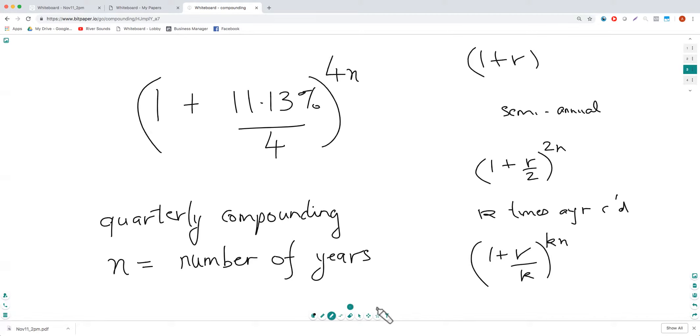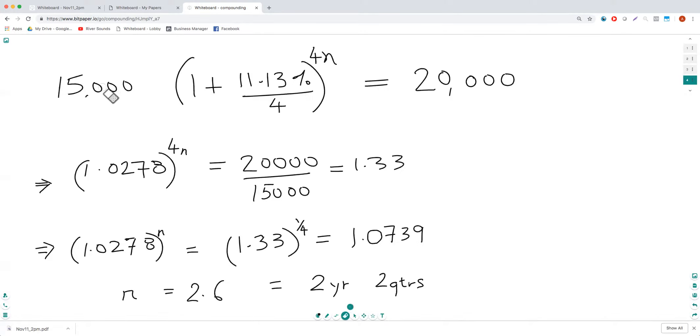Okay, so let's proceed. You've got 15,000 times this formula equals 29,000. So basically, you take 15,000, you divide it, and you get the answer 1.33. It's 20,000 by 15,000 is 1.33.